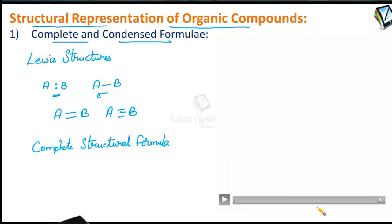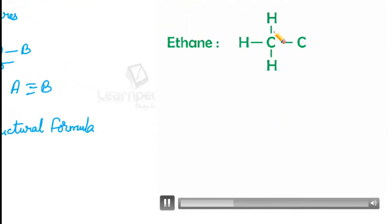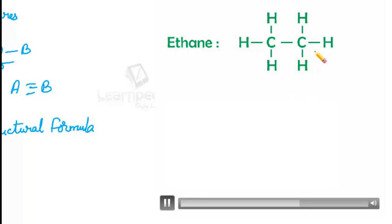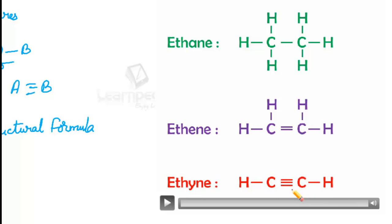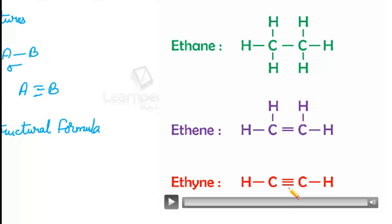See the example. This is ethane, in which carbon forms separate single bonds with three hydrogens, and this carbon also forms separate single bonds with three hydrogens, with a carbon-carbon single bond. In the case of ethene, you can see the carbon-carbon double bond. And in the case of ethyne, you can see the carbon-carbon triple bond. This is how we represent complete structural formulae in terms of dashes — one dash for single bond, two dashes for double bond, and three dashes for triple bond.